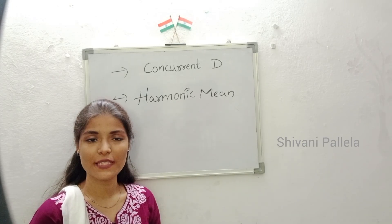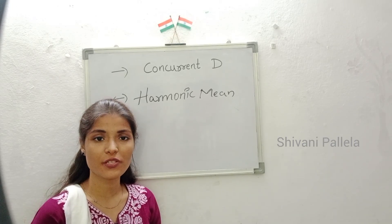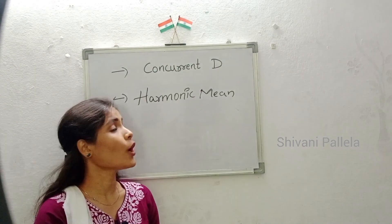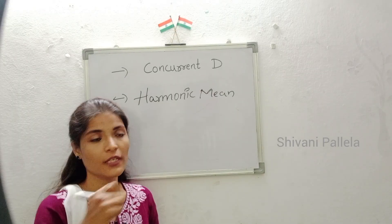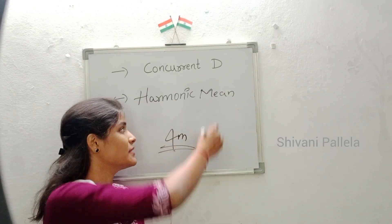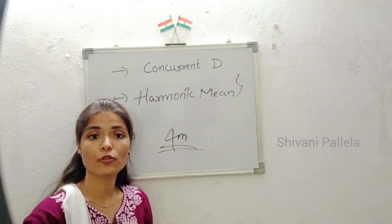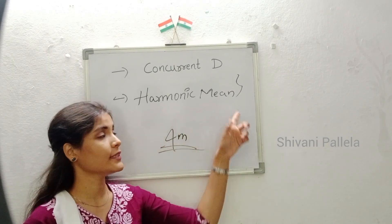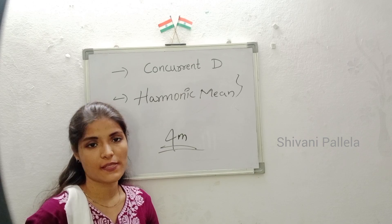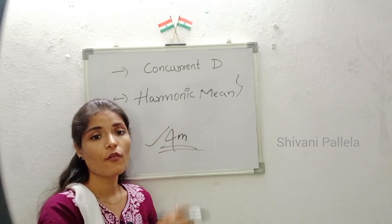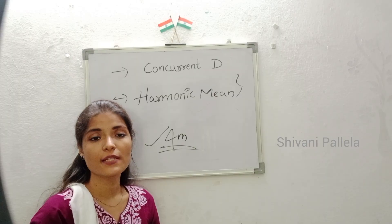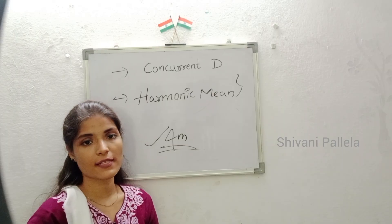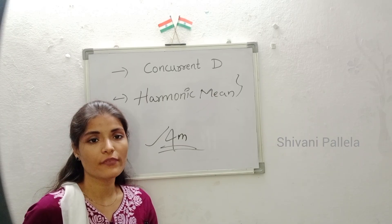Hello all, welcome back to our channel. In this video we are going to discuss the problematic questions which will definitely come in business statistics examination in Part A — that is concurrent deviation and harmonic mean. One or two methods they may ask in Part A as problematic questions. This is an important class for semester three students.